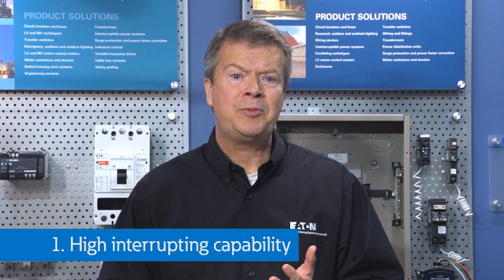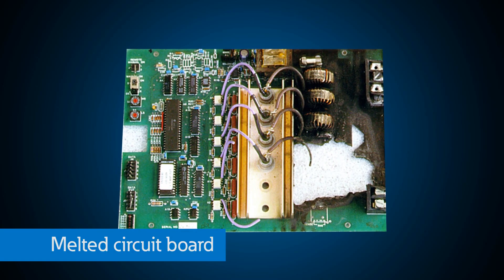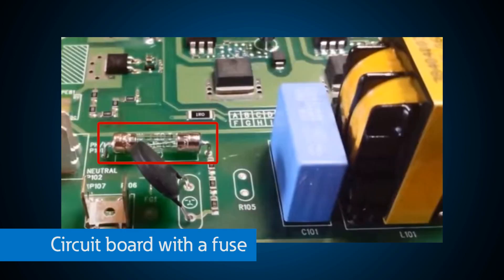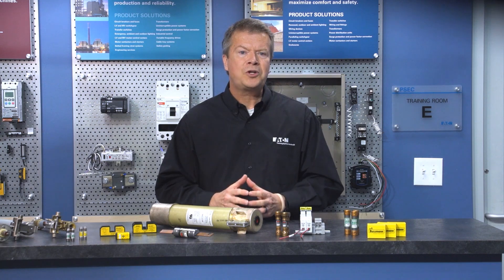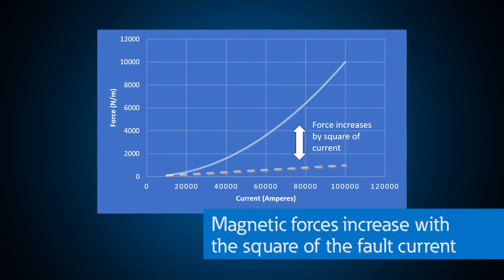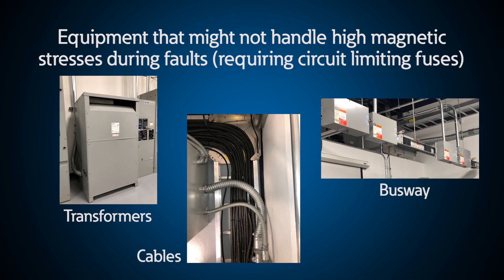Three key special needs: First, high interrupting capability — the closer to the utility service entrance, the higher the available fault current, so fuses are commonly found in service entrance switchboards and switchgear. Even on a small circuit board, 20 amps through a sensitive trace would be very destructive. Second, current limiting — magnetic forces during a fault increase by the square of the fault current, so products that can't tolerate those stresses use current-limiting fuses.